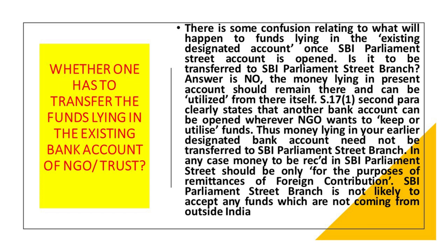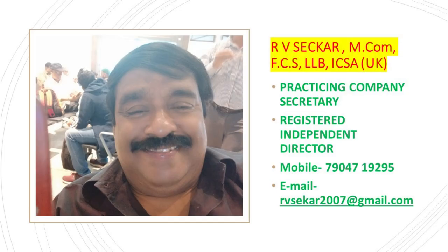Section 17(1) of the FCRA, 2nd paragraph, clearly states that another bank account can be opened wherever the NGO wants to keep or utilize the funds. Thus, money lying in your existing designated bank account need not be transferred to the SBI Parliament Street Branch in New Delhi. The SBI Parliament Street Branch account is only for the purpose of receiving remittances of foreign funds — it is not likely to accept any funds not coming from outside India. These rules and regulations came into effect immediately, and the dedicated bank account at Parliament Street, New Delhi, must be opened on or before 31st March 2021.